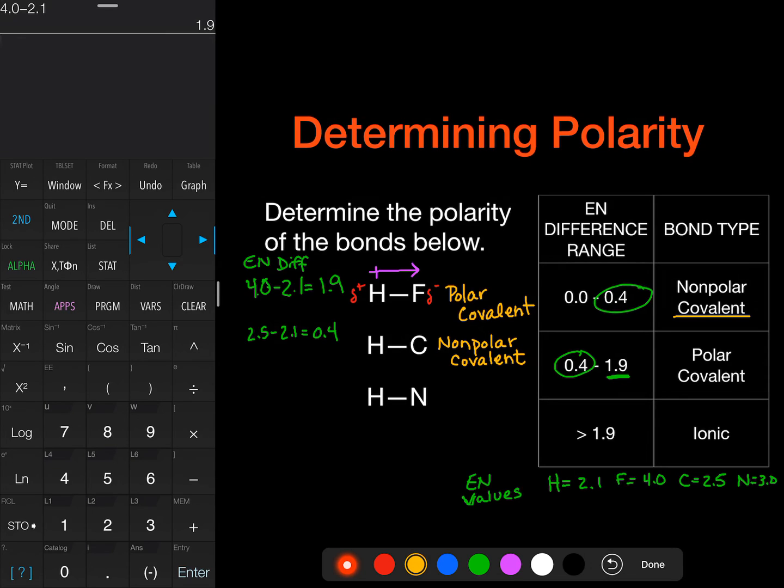And then finally, we have the one between hydrogen and nitrogen. So we're going to have our 3.0 minus our 2.1. And that's going to give us our 0.9. So 0.9. And that again is going to be polar covalent. And in this case, it's also going to be pointing to the right only because that higher electronegativity value is on the nitrogen. So when we draw that little vector quantity, we're going to go this direction.